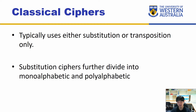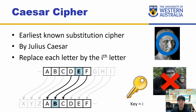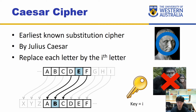Let's get started with the very basic one: Caesar cipher. The Caesar cipher is one of the earliest known substitution ciphers. It was invented by Julius Caesar. The idea is very simple — you have the list of alphabets, and based on a number you choose, you shift the alphabet by that many times.